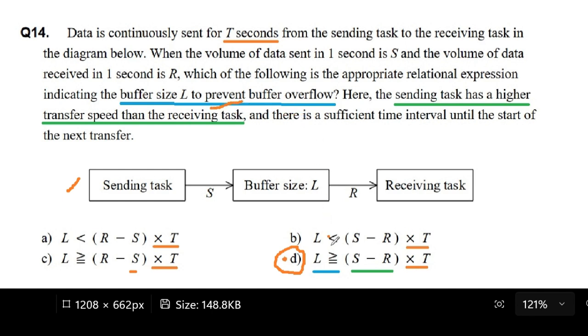And if we look at the equation in letter D, it looks like we just make it larger. Larger or equal to whatever would be the difference between the sending task and the receiving task. So even though we get something really high here, we just make the buffer so much higher. And I thought that pretty much solves the buffer overflow problem.